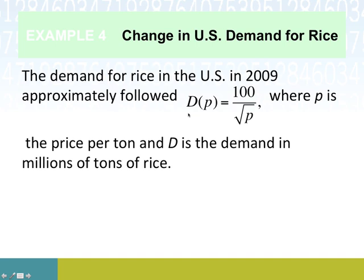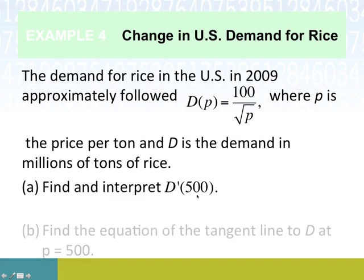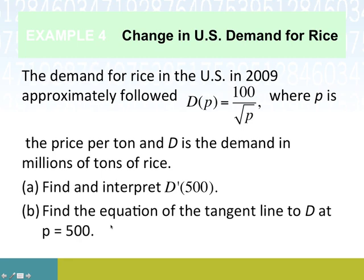So we've got one additional applied example. This one has to do with change in demand for rice in the United States. In 2009, demand could be predicted by the formula D(p) = 100/√p, where D is demand in millions of tons and p is the price per ton. Find and interpret D'(500), and find the equation of the tangent line to D at p = 500.